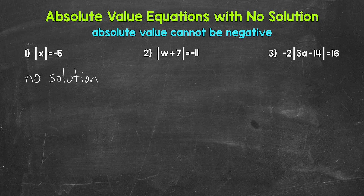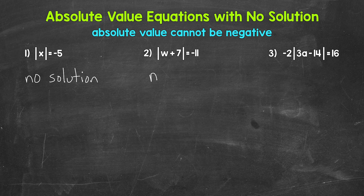Let's move on to number 2 and take a look at another example. We have the absolute value of w plus 7 equals negative 11. Again, we have the absolute value equaling a negative. There's no way to make this equal negative 11 — no way to make that absolute value equal negative 11. So this is another example of an equation with no solution.